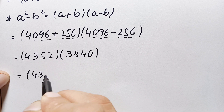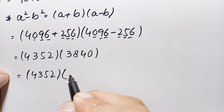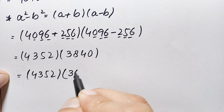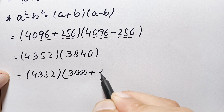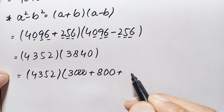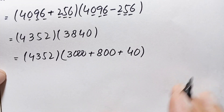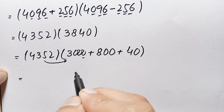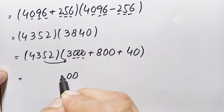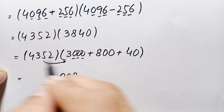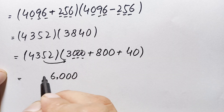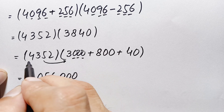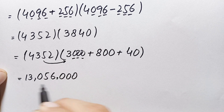We express 3840 as the sum of place values of its non-zero digits: 3000 plus 800 plus 40. First, multiplying 4352 by 3000: 4352 times 0 is 0 three times; then 4352 times 3 — 3 times 2 is 6; 3 times 5 is 15, carry 1; 3 times 3 is 9 plus 1 is 10, carry 1; 3 times 4 is 12 plus 1 is 13. This gives 13,056,000.